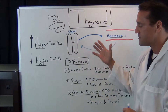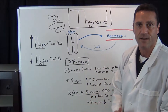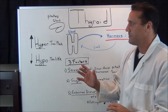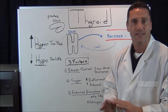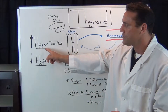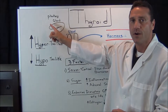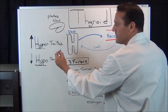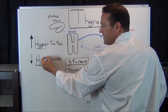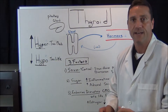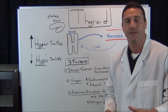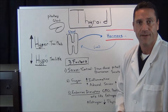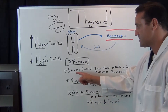In regards to the thyroid, there are three factors I like to talk about that will affect how the body responds. In regards to any organ system, you will usually have an increase — a hyper state — and eventually an excess of too much is going to shut it down to hypo. The three factors that affect the thyroid gland are: first and foremost, stress.